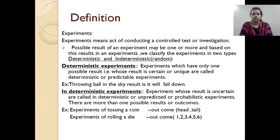Indeterministic experiment: if the outcome is not unique, uncertain and unpredictable, it is called an indeterministic experiment. For example, if I toss a coin, the outcome is head or tail. Throwing a die, the outcome is one to six. Indeterministic experiment deals with randomness, so it is also called a random experiment. How many calls will you get on hold? How many customers will visit the supermarket? In all these examples, we cannot predict the outcome, so it is called an indeterministic experiment.